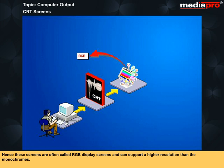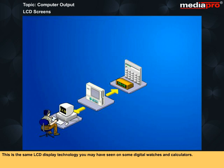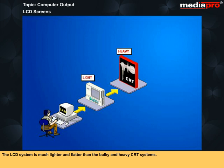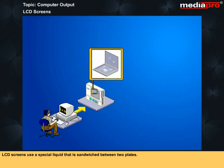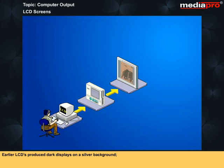Other than CRT technology, Liquid Crystal Display or LCD is also used for display screens, particularly on portable systems like laptops and notebooks. This is the same LCD display technology you may have seen on some digital watches and calculators. The LCD system is much lighter and flatter than the bulky and heavy CRT system. LCD screens use a special liquid that is sandwiched between two plates. While the top plate is clear, the bottom plate is reflective. The molecules in this liquid are generally aligned so that light passes through the bottom surface and reflects out through the top surface. Earlier, LCDs produced dark displays on a silver background, while today many color LCDs are also being developed.